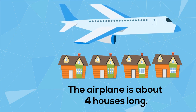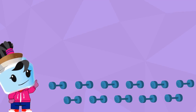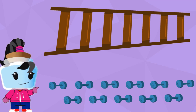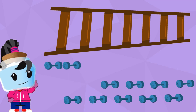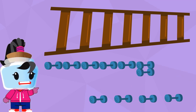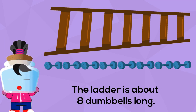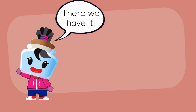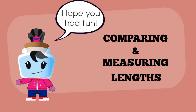Lastly, use the dumbbells to measure the length of the ladder. If we line the dumbbells below the ladder, we will need to use one, two, three, four, five, six, seven, eight dumbbells. So the ladder is about eight dumbbells long. There we have it — we have learned how to compare and measure lengths. Hope you had fun!